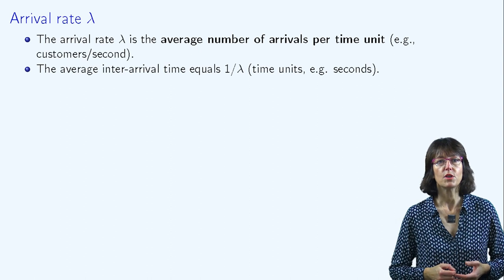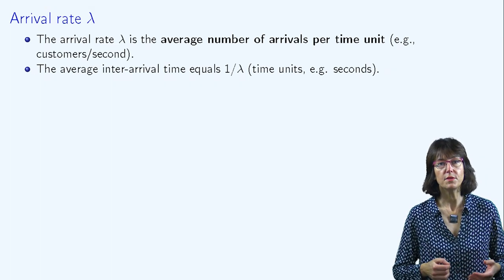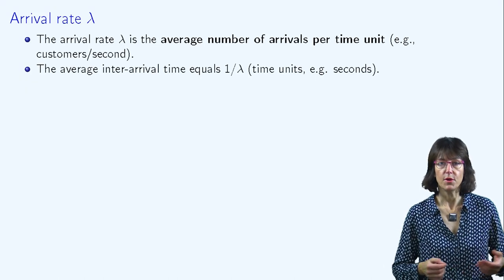Reciprocally, the average time between two consecutive arrivals equals 1 divided by lambda, and is stated in, for example, seconds.